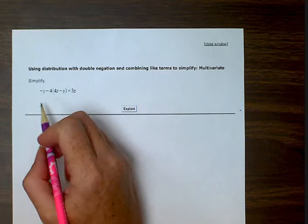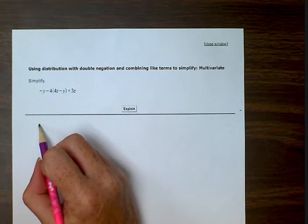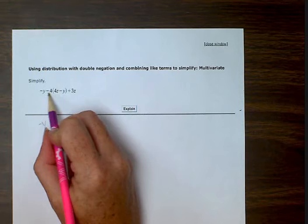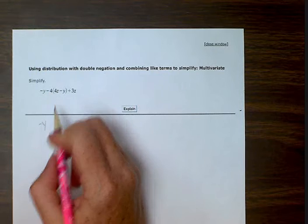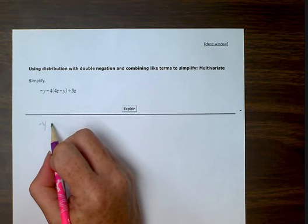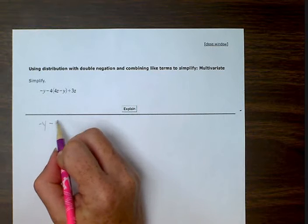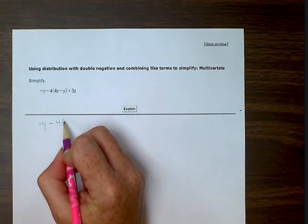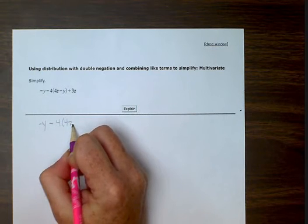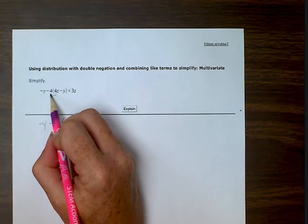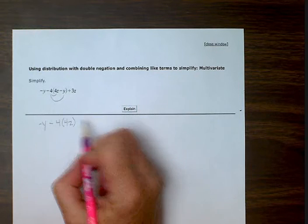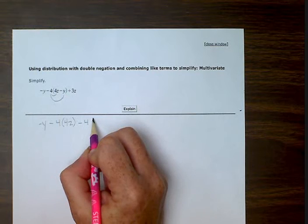So my first step is to rewrite by distributing this negative 4. So I'm going to write negative 4 and multiply that by 4z, then distribute the negative 4 again to the negative y.